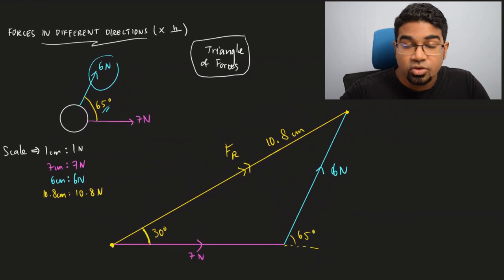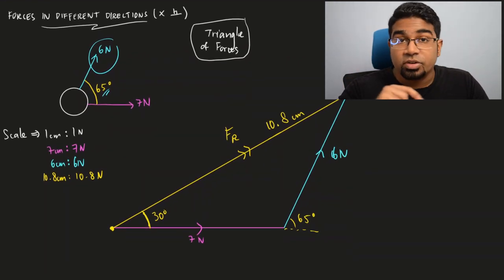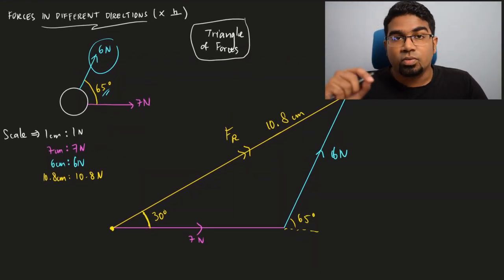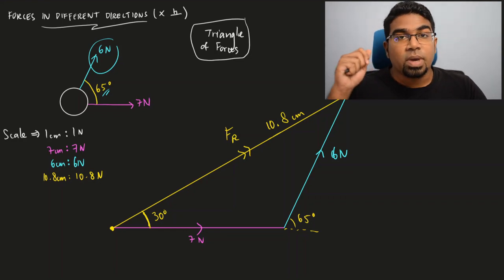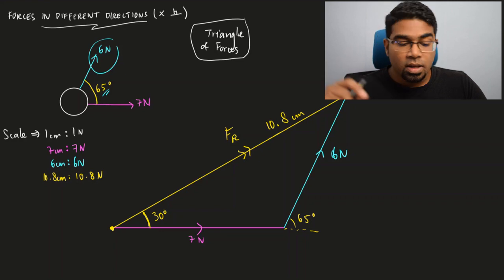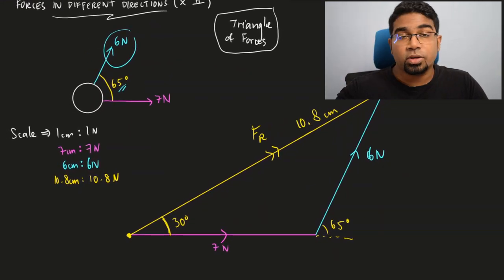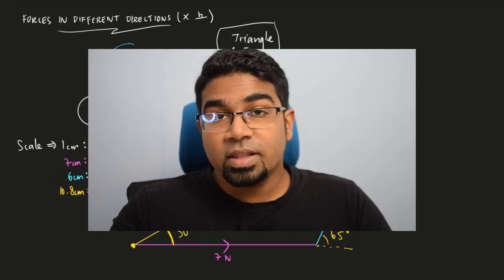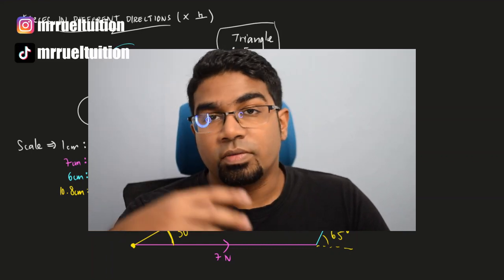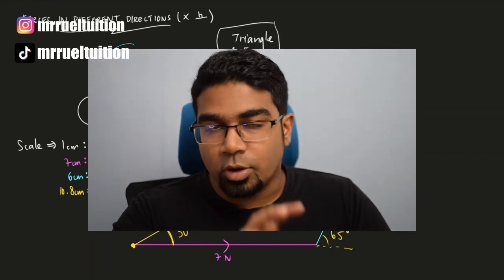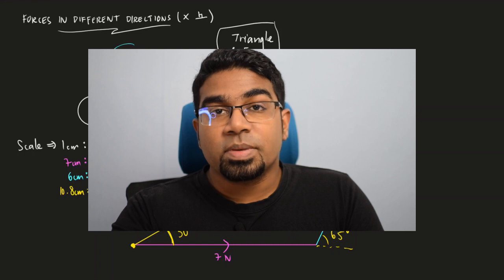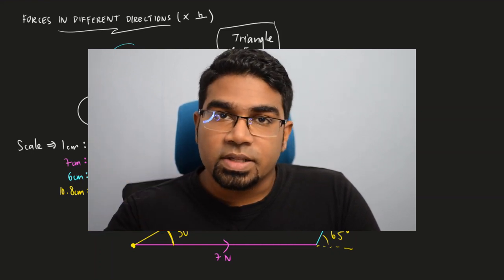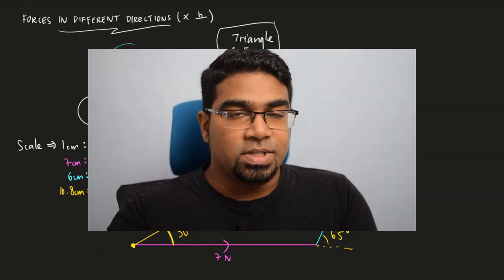So this is called the triangle of forces method. We draw the triangle accurately according to scale, measure the angles accurately, and then measure the length of the resultant force line to find its magnitude using the scale. Once again, the resultant force is simply the vector sum of all the forces acting on an object. I hope you've learned from this video — please don't forget to hit the like button and do subscribe if you enjoy educational videos like this. I'll see you in the next video.